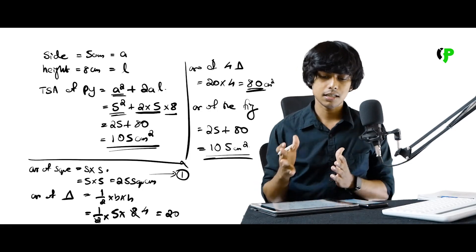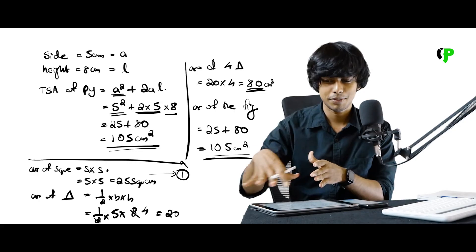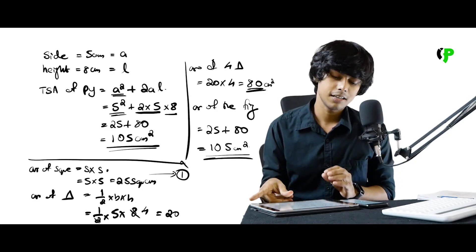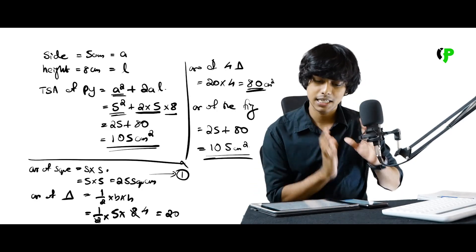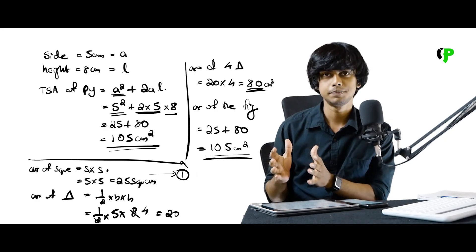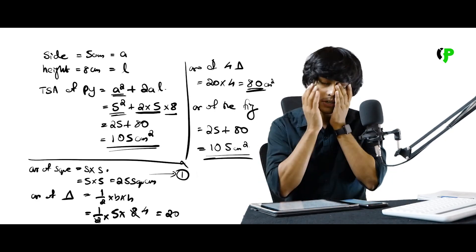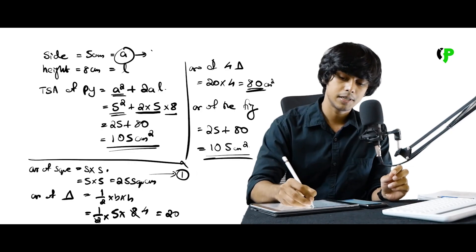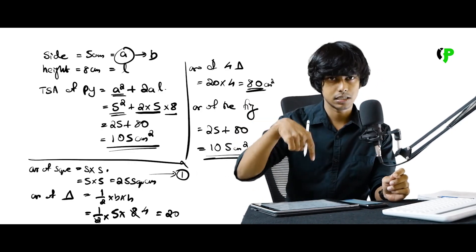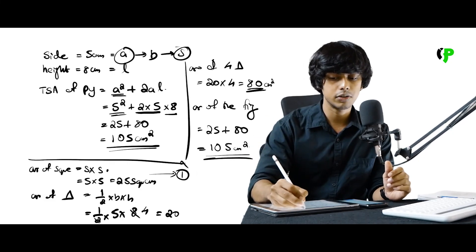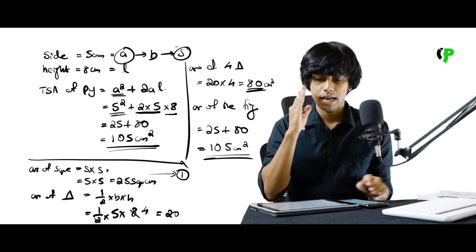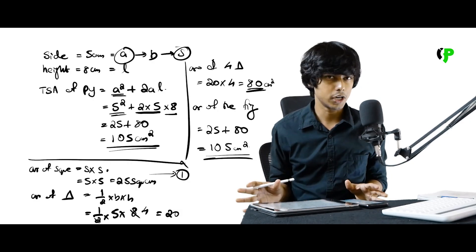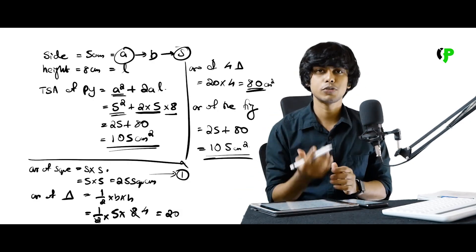So we have two methods: using the formula TSA of pyramid equals A² plus 2AL, or calculating each part separately. Other teachers may use different alphabets — A, B, or S — but as long as we use consistent notation, we will get the correct answer.